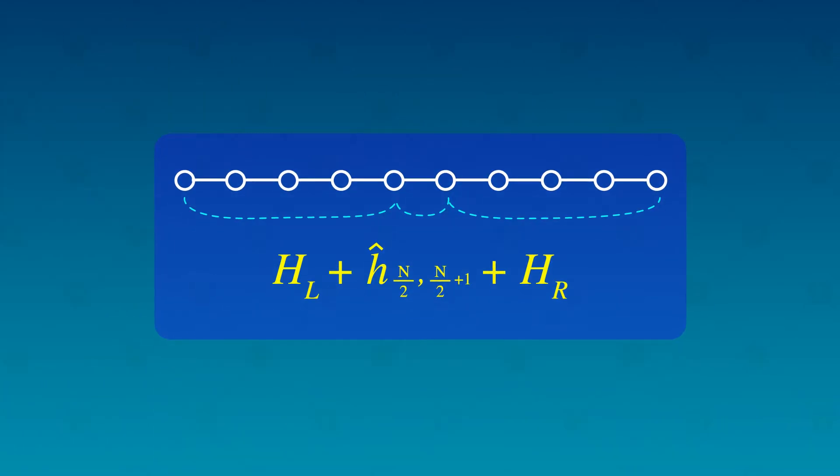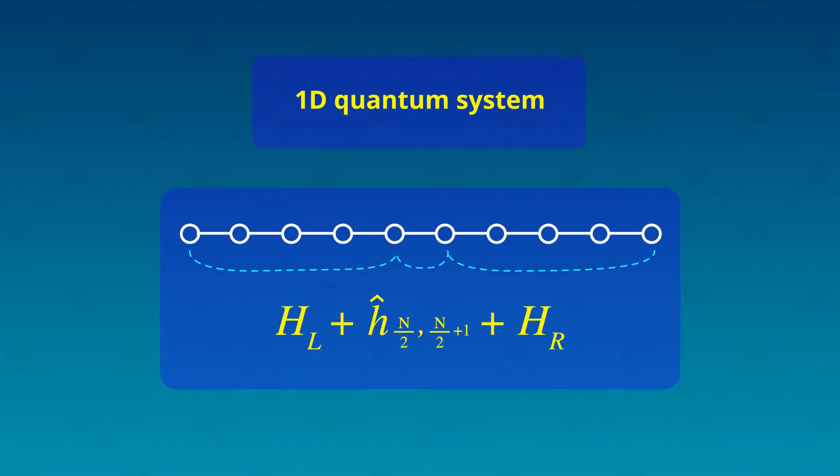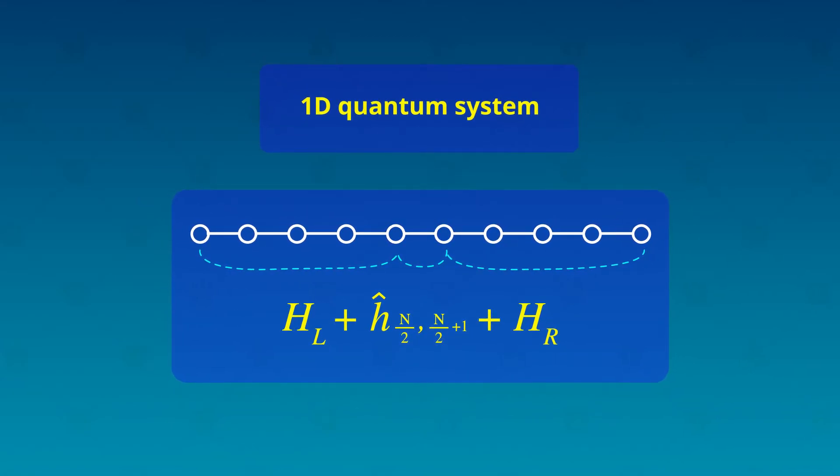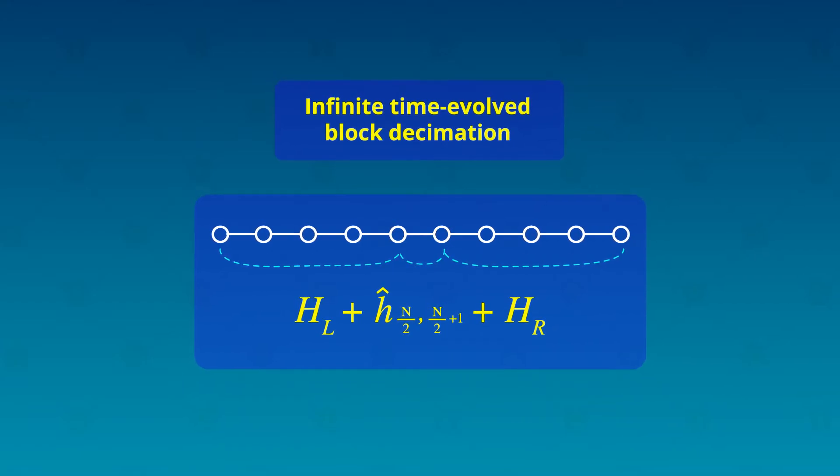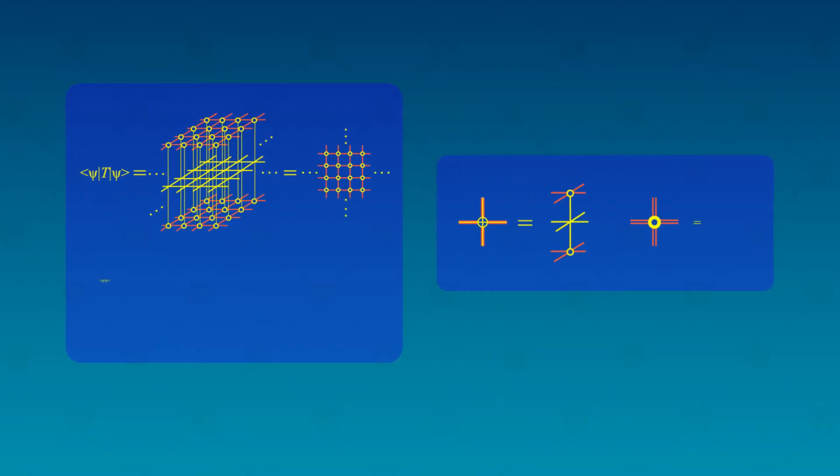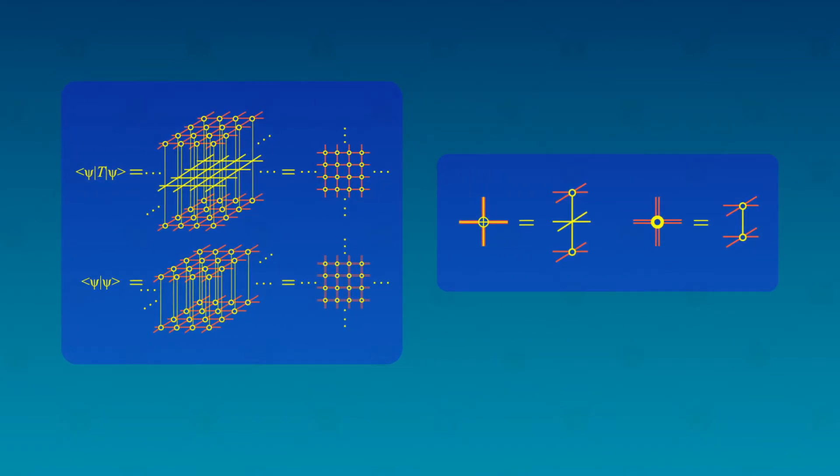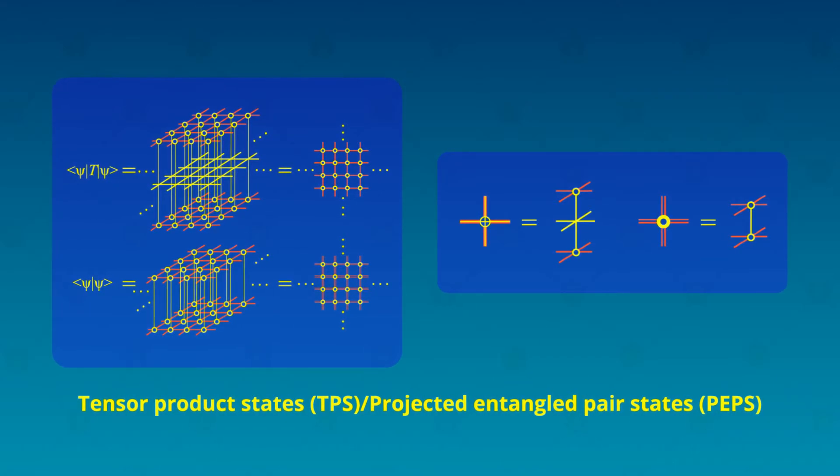The researchers then pointed out the difficulties of recasting this CTM formulation to the 1D quantum system and how they can be bypassed in the formulation of infinite time evolved block decimation and density matrix renormalization group. They also highlighted the higher dimension generalization of MPS, such as tensor product states or projected entangled pair states.